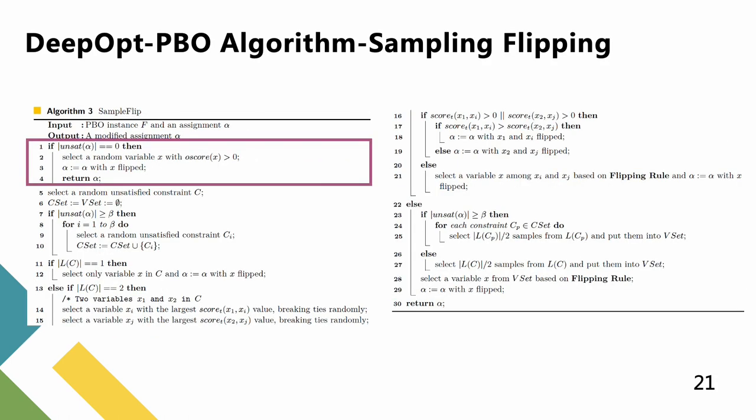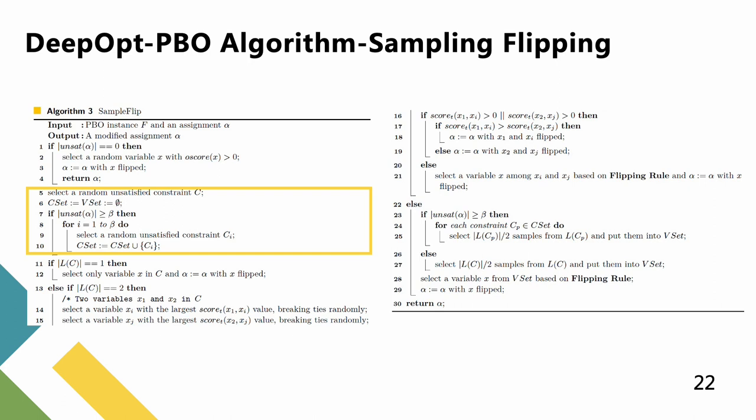The pseudo code of sample flip is outlined in Algorithm 3. In the beginning, if there are no unsatisfied constraints, the algorithm selects and flips a random variable x with O-score(x) larger than 0. The first sampling method is to select a random unsatisfied constraint C. If the size of unsat(α) is larger than β, then the algorithm activates the second sampling method, namely adding β unsatisfied constraints into C set.